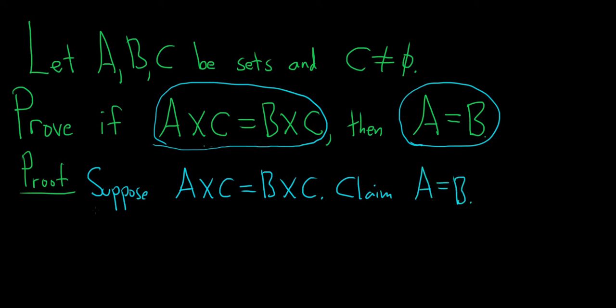We'll do this using the method of double inclusion. We'll show that they are both subsets of each other. Let's start by showing that A is a subset of B. I'll indicate that with the subset symbol and a colon. We're going to show A is a subset of B.